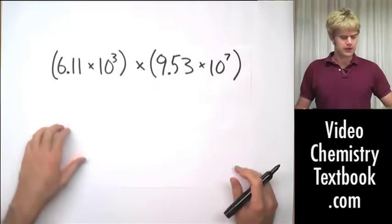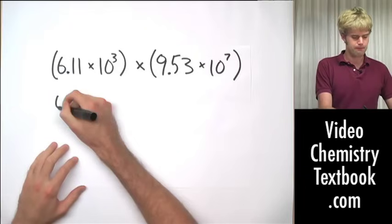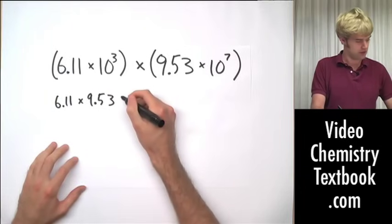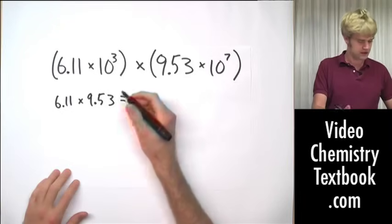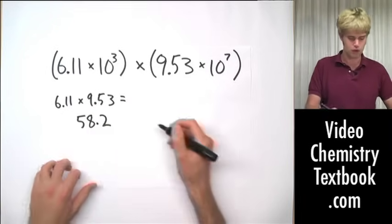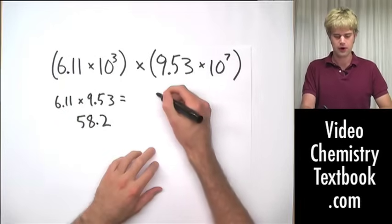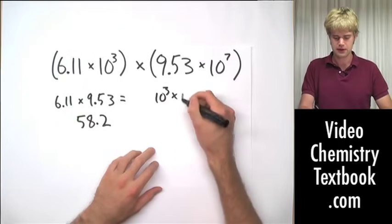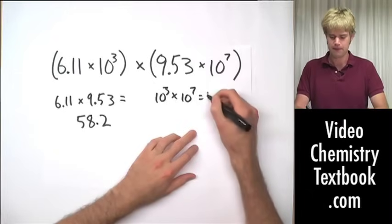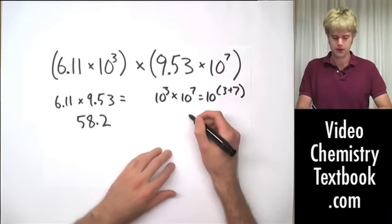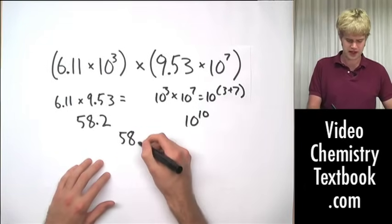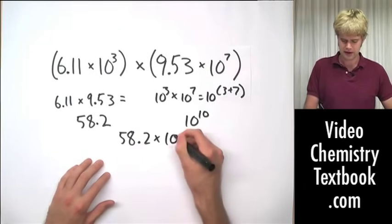Here's an example where we do 6.11 times 9.53, and that's going to give us 58.2 for this part. And then 10 to the third times 10 to the seventh, which equals, because it's multiplication we add, 10 to the 3 plus 7 equals 10 to the tenth. So we can write this as 58.2 times 10 to the tenth.